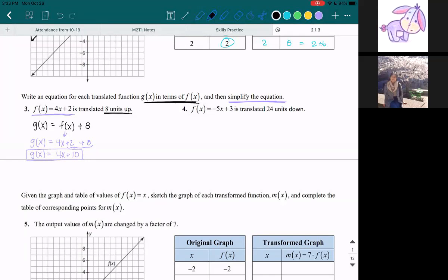Let's try it in the downwards direction. So they say 24 units down, so g(x), the new equation, is equal to f(x) down is subtracting 24. Okay, so that's writing g(x) in terms of f(x). Now we're going to simplify the equation.